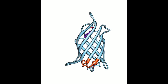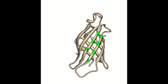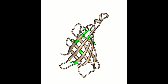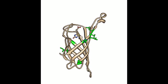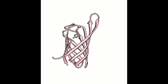Shortening the loop should increase the stability of the molecule without affecting its function. Dissociating streptavidin exposes residues that were previously buried at the interface, and these were mutated in the monomer to be consistent with their increased solvent exposure. The resulting molecule had comparable sequence identity to streptavidin and rhizavidin, indicating that it is a true hybrid between the two parent molecules.